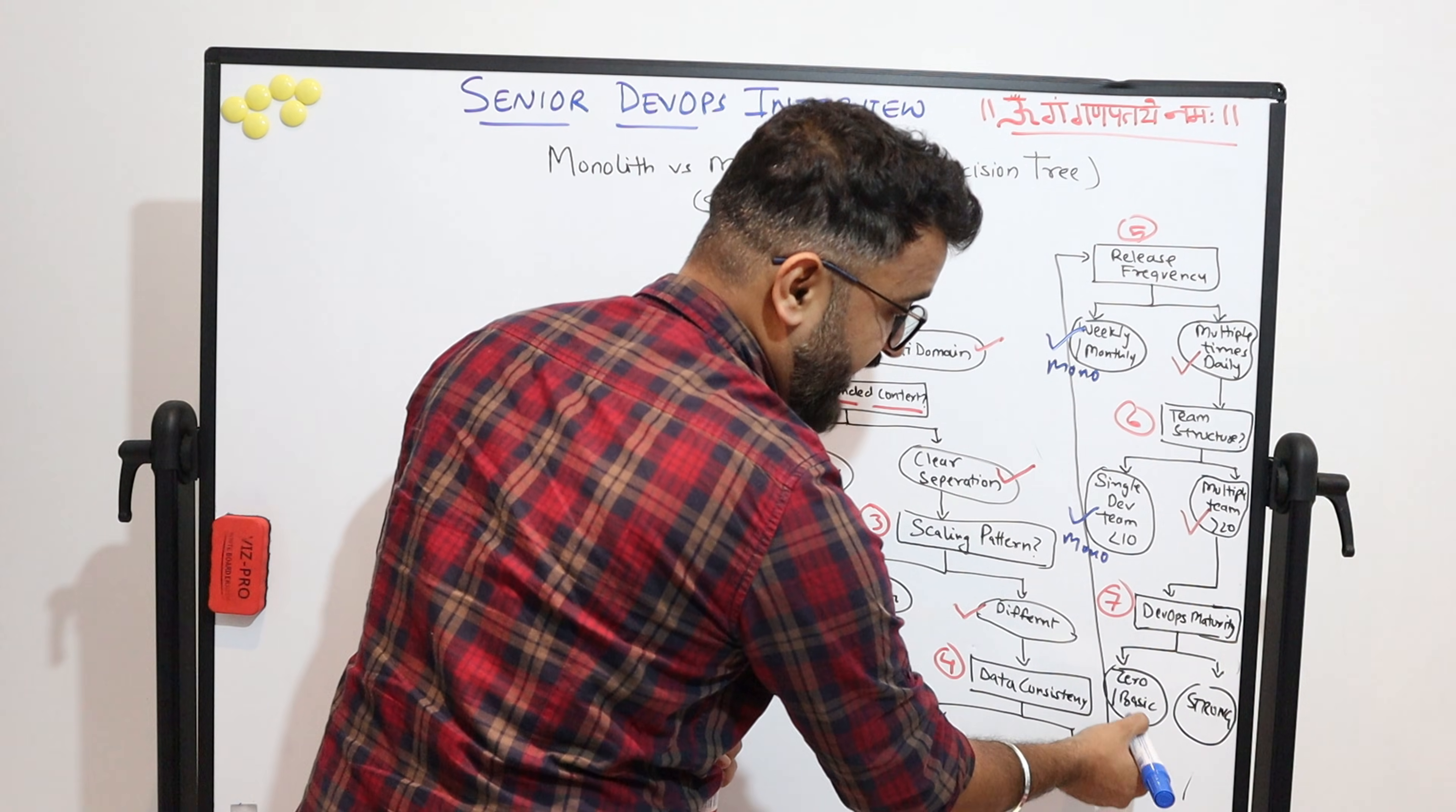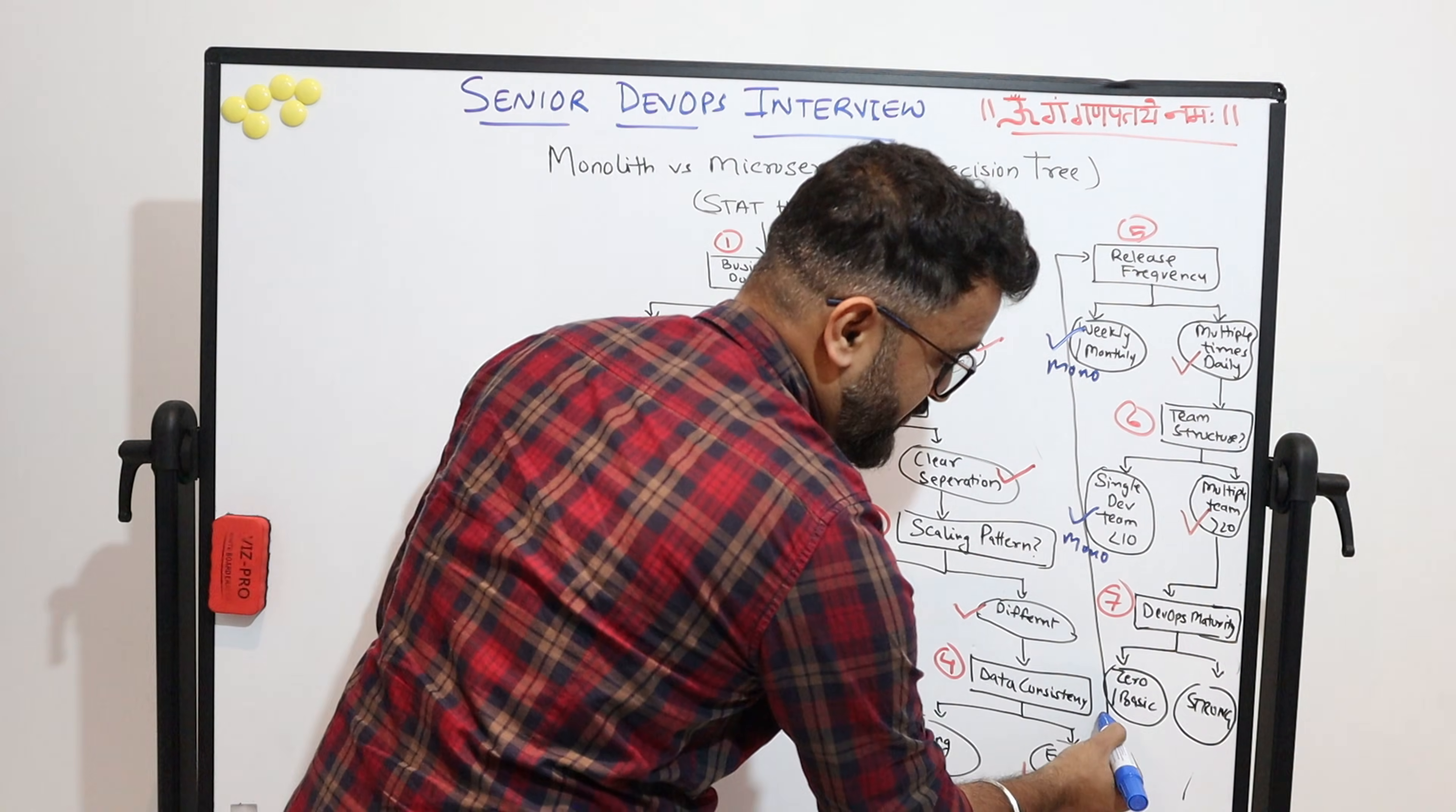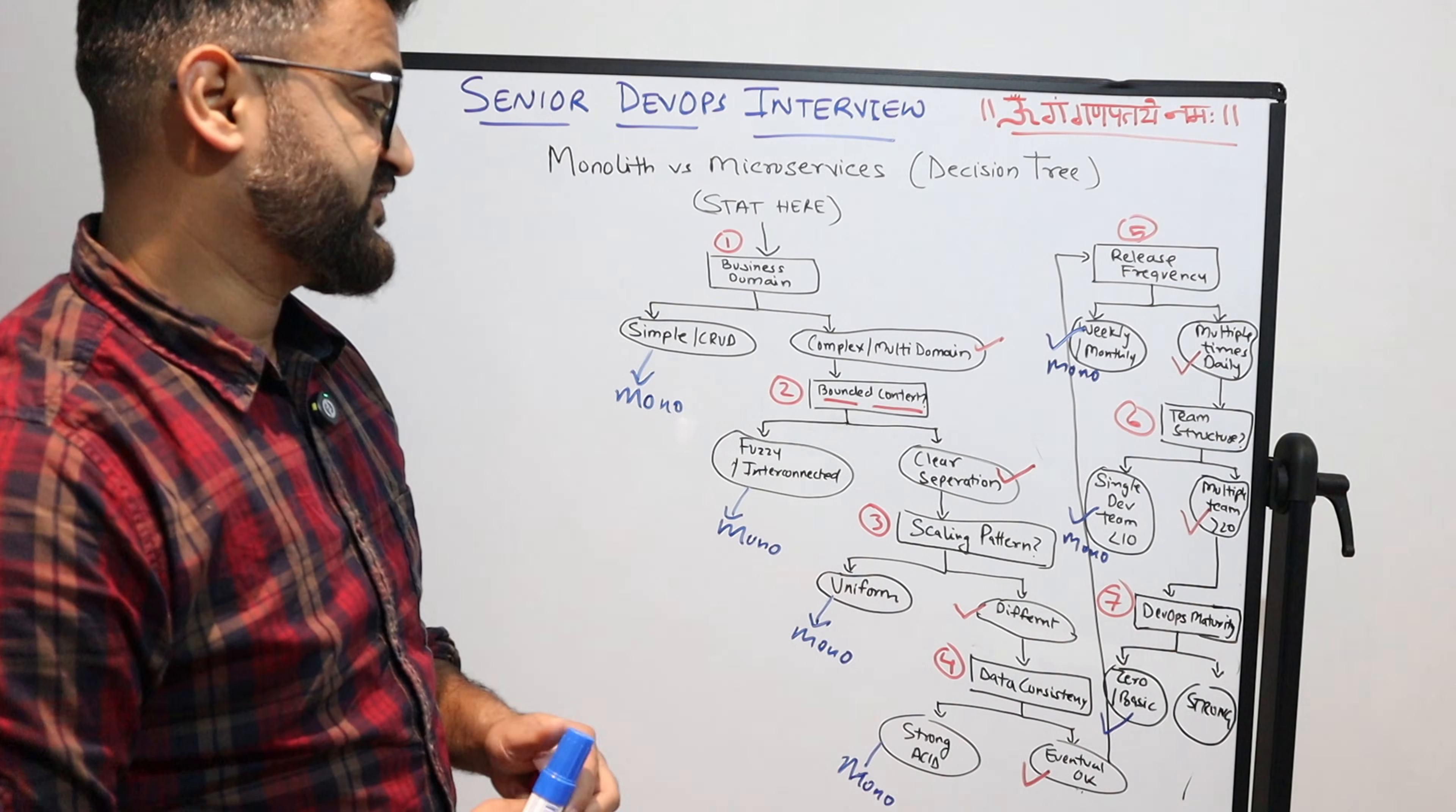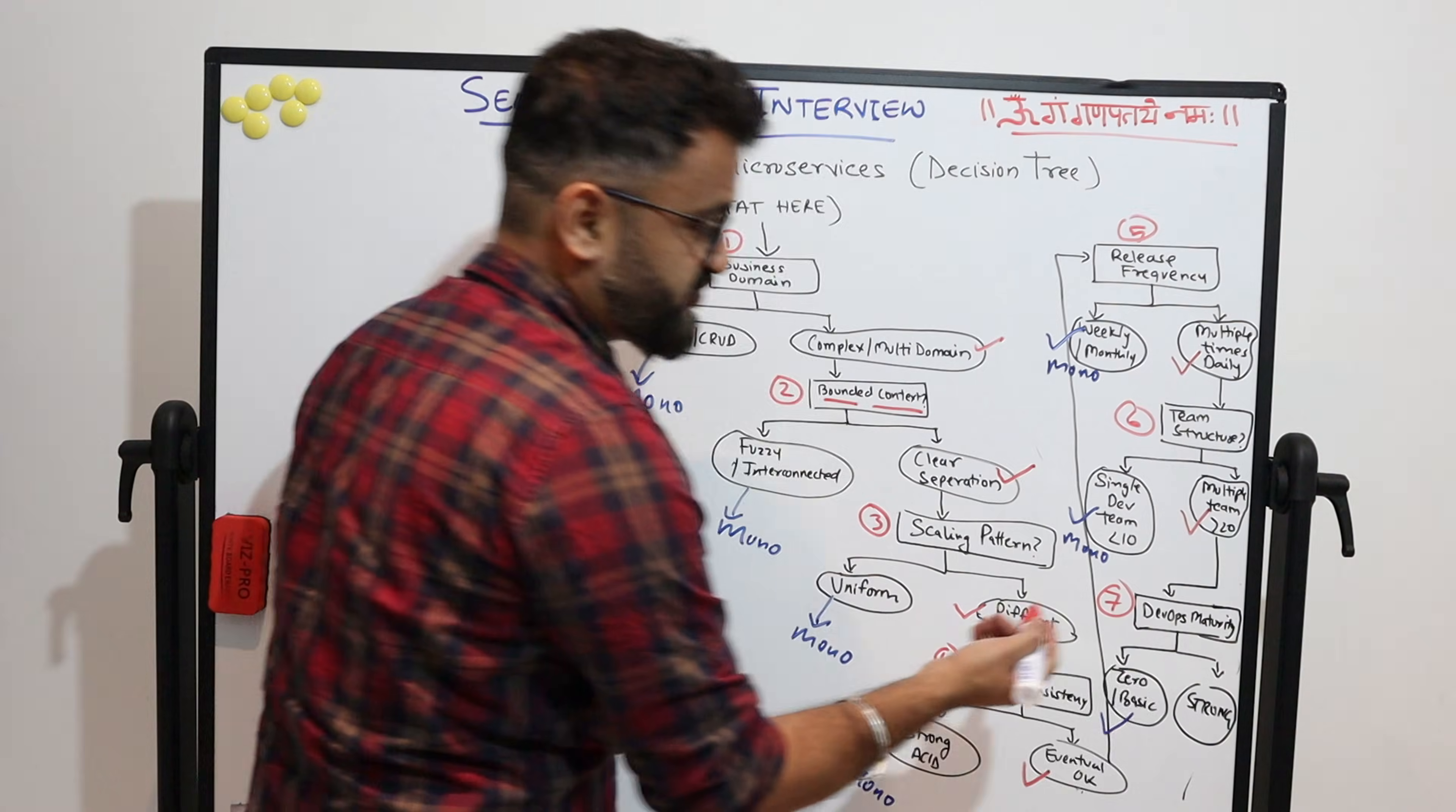If your team is bigger, multiple teams are there and cross-functional teams are there, and if the size is greater than 20 to 30—some DevOps teams have more than 50 people also—then it is a good sign for choosing a microservices solution. Then comes the DevOps maturity.